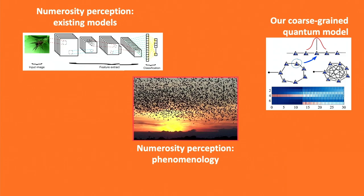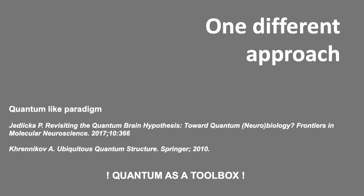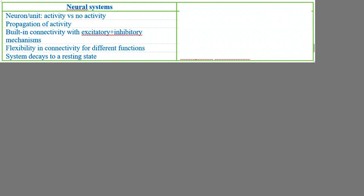Our approach uses the so-called quantum-like paradigm, which has been developed and used in many different contexts. It consists in using quantum physics and quantum networks as a mathematical toolbox to describe complex systems that do not need to be quantum. It has been used, for example, for mimicking decision-making mechanisms. We take our neural system, map its essential functions, and map it into a quantum model.